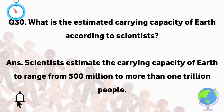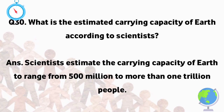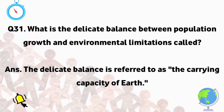What is the estimated carrying capacity of Earth according to scientists? Scientists estimate the carrying capacity of Earth to range from 500 million to more than 1 trillion people. This delicate balance between population growth and environmental limitations is referred to as the carrying capacity of Earth.